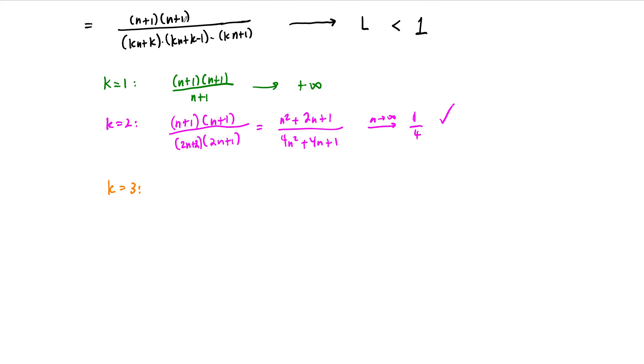So let me write down what happens when k is equal to 3. Notice the numerator has no k's involved. And so that's why we're really just looking at the denominator here. And you can probably guess what's going to happen, but let's write it out anyway. This term on the bottom is now going to be 3n plus 3 times 3n plus 2 times 3n plus 1. And if we were to multiply this out, so I'll do this in kind of the long way one more time.